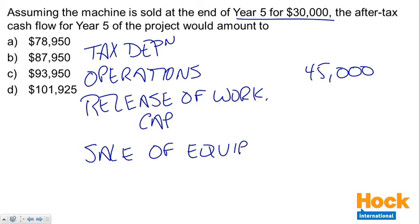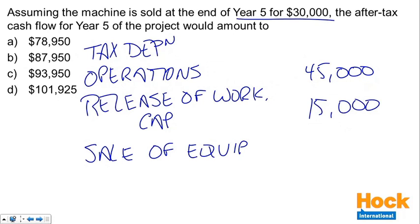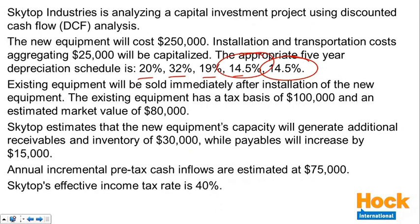The release of working capital is $15,000 — a cash inflow as current assets and liabilities come down. For the depreciation number: year five is 14.5%. So we take $275,000 times 14.5% to get the tax depreciation expense, then multiply by 40%, giving a tax depreciation shield of $15,950 in year five — the same as year four. This is different from years one, two, and three because a different percent of cost is taken as depreciation each year.